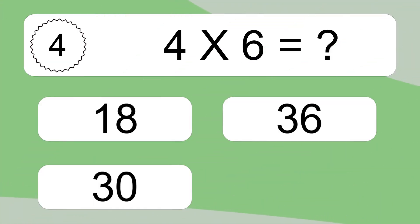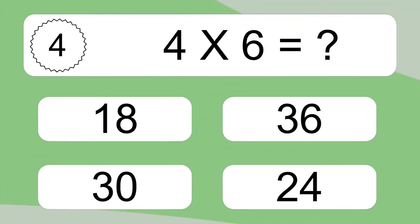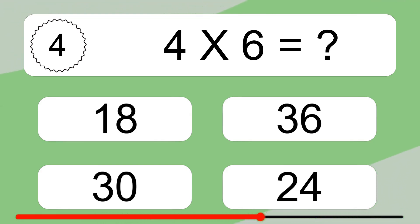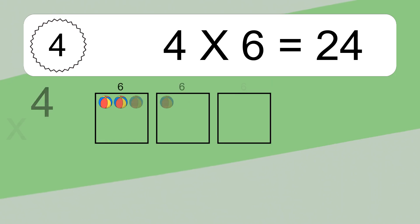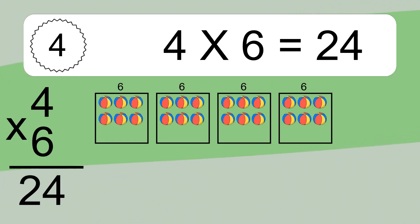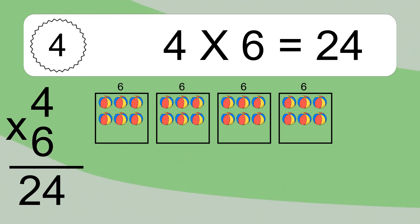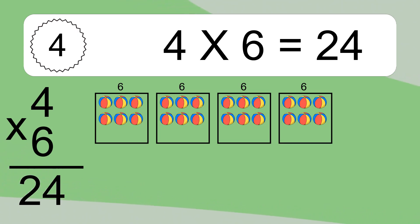4 times 6 equals what? We have 4 boxes, and each box has 6 colorful balls inside. If you count all the balls in all the boxes together, you will have 4 times 6 balls. This equals 24 balls.